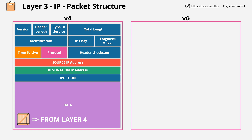Packets move through many different intermediate networks between the source and the destination, and this is a value which defines how many hops the packet can move through. It's used to stop packets looping around forever — it defines a maximum number of hops that the packet can take before being discarded.